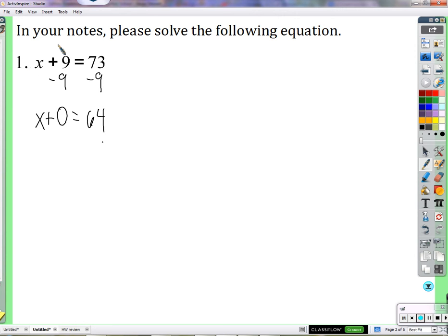Because this amount minus 9 is just x. So this amount minus 9 must be equivalent to x. We started balanced, we made sure it stayed balanced, so x is 64. Try this. Let's try this.